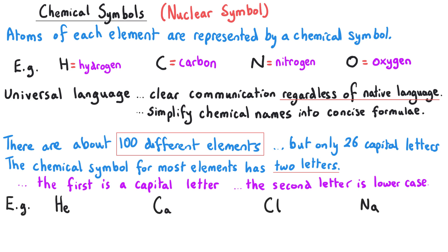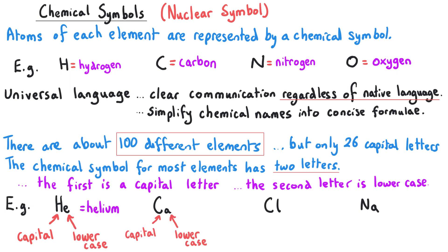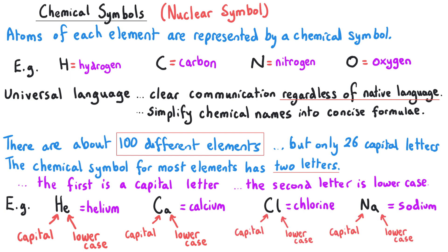For some examples, we have capital H, little e for helium; capital C, little a for calcium; capital C, little l for chlorine; and capital N, little a for sodium. You can see from these examples that three elements all begin with the letter C, but we use lowercase a and l to differentiate between them.